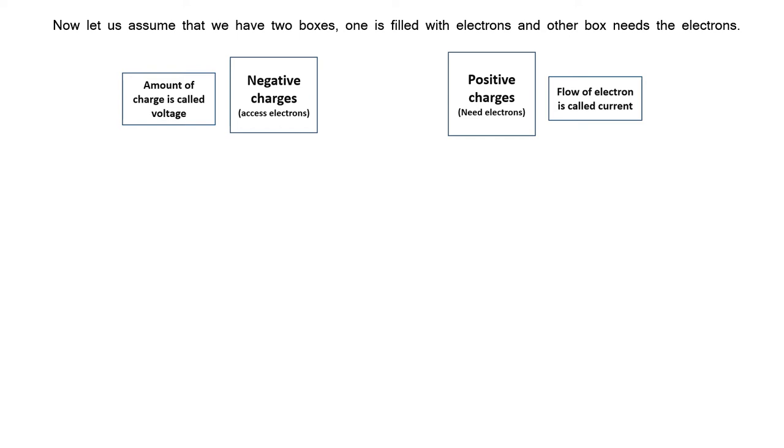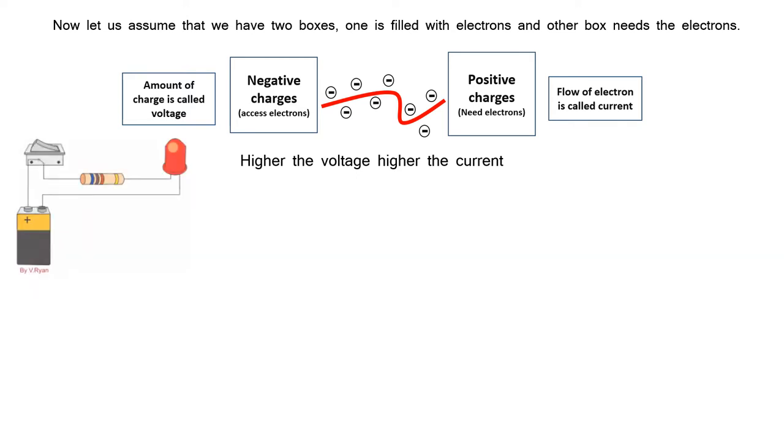When we connect these two boxes with a wire, then the electrons get the path to reach its destination. Now you can observe that there must be a force acting between these positive and negative charges. This force is a fundamental force which allows positive charges to attract the negative charges. Any force in the universe needs energy to sustain. When positive charges apply the force, then negative charges get the energy to move. This energy can be used to run the electronic devices.